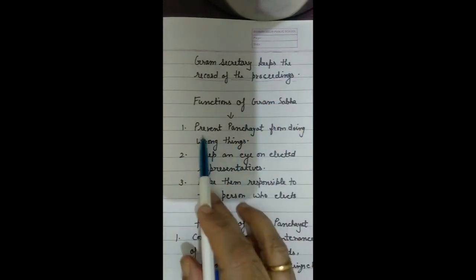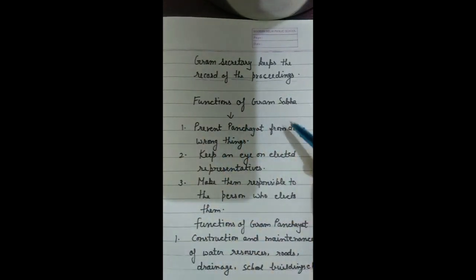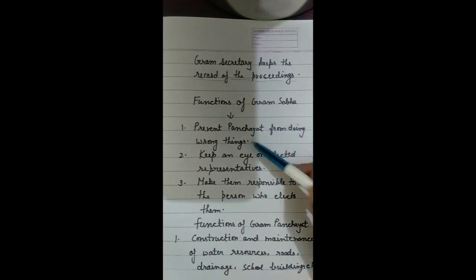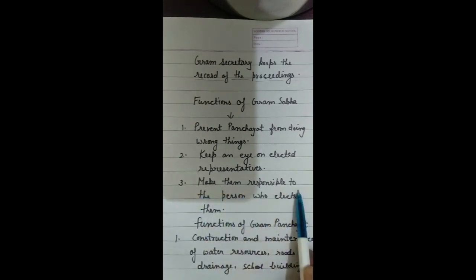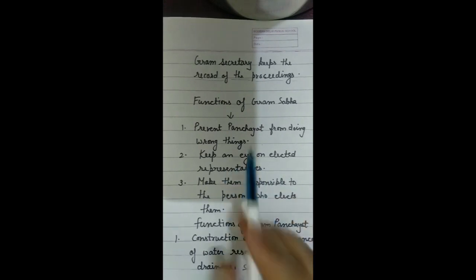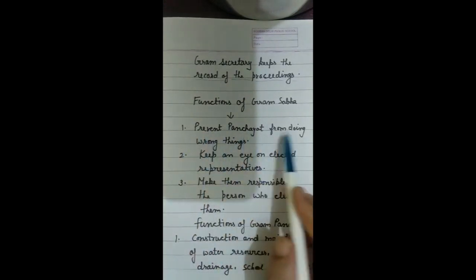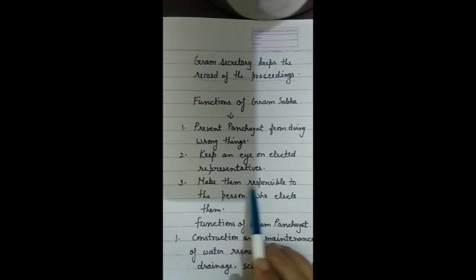Gram Sabha prevents the Panchayat from doing wrong things by keeping an eye on elected representatives. It also makes the Gram Panchayat responsible to the persons who elected them.